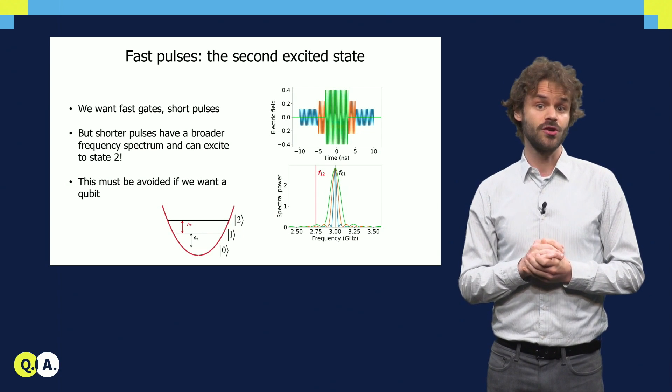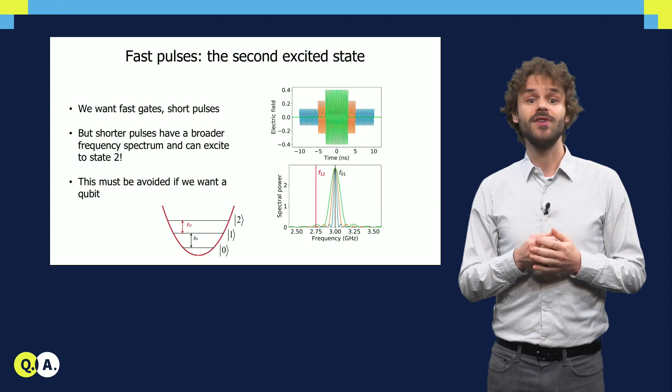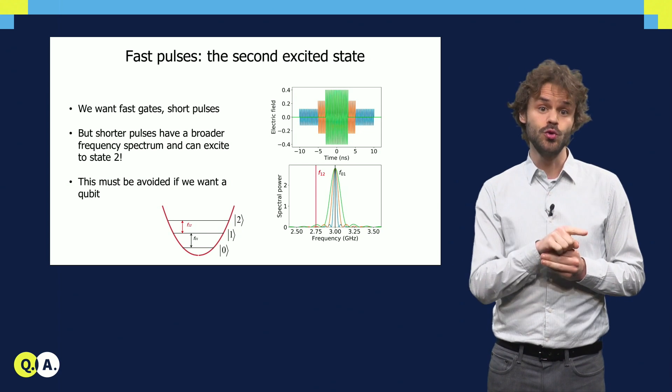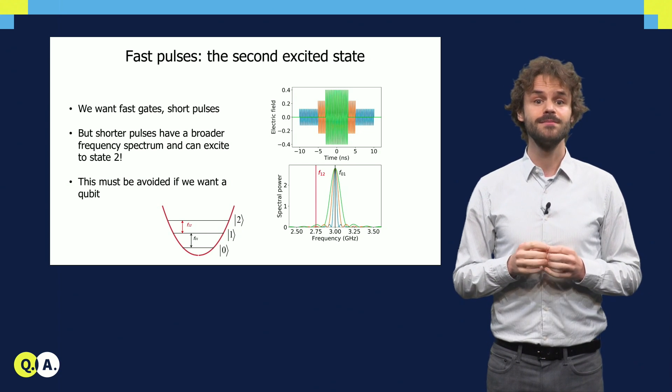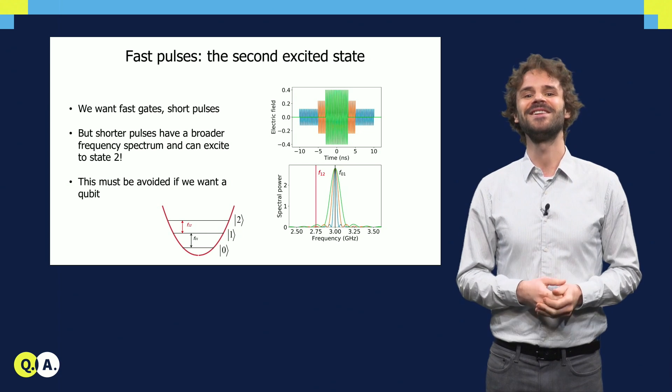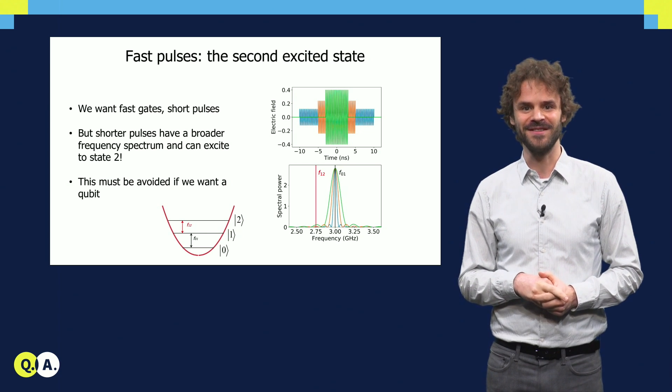Unfortunately, that means that if we make the pulses shorter and shorter, at some point the spectrum is so broad that the pulse drives oscillations not only between the states 0 and 1, but also 1 and 2. Then the transmon does not work as a qubit anymore, since three transmon states are involved, and the nice Bloch sphere picture rotation breaks down.